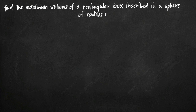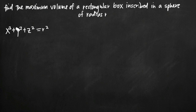Today we're going to talk about how to find the maximum volume of a rectangular box inscribed in a sphere with radius r. The first thing we need to do with this multivariable applied optimization problem is to start writing down what we know. The equation of a sphere is x² + y² + z² = r², which is analogous to the circle equation x² + y² = r² with the z² component added for three dimensions.